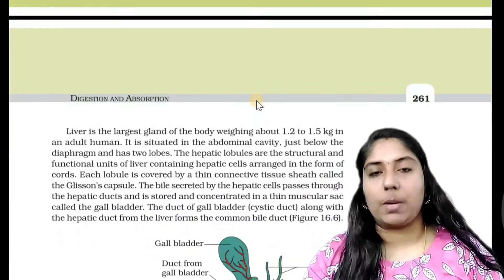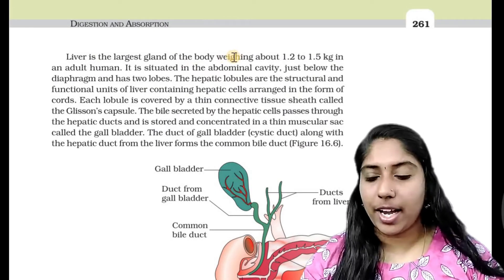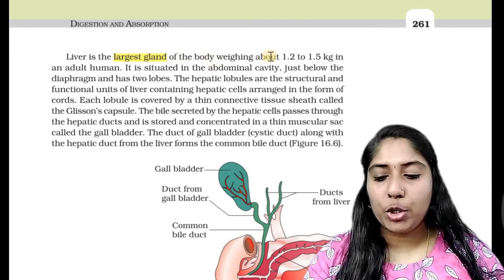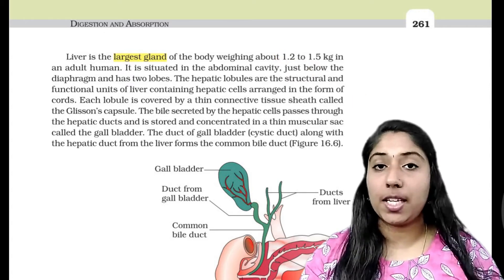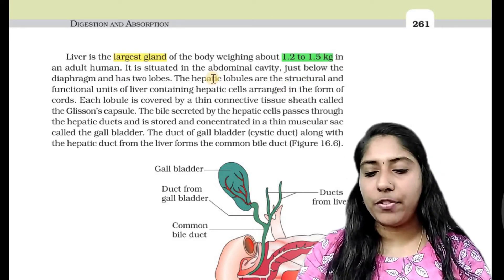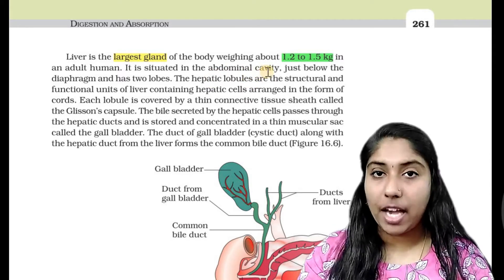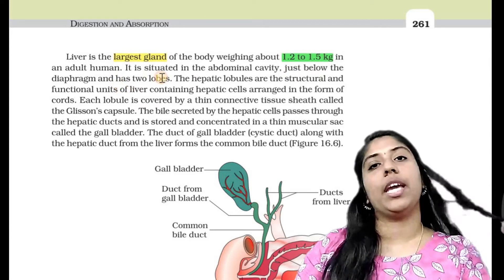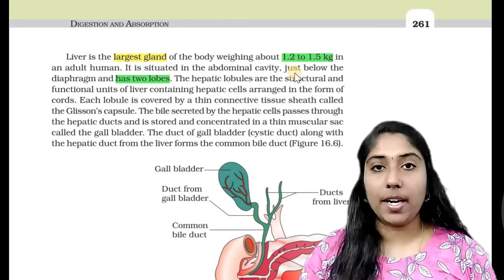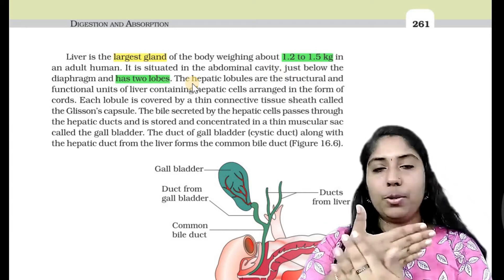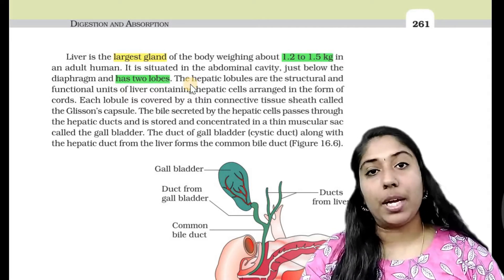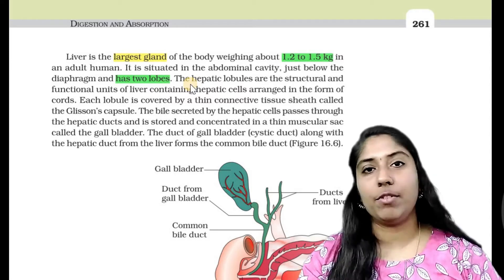Next, we'll start with the liver. The liver is the largest gland of the body, weighing 1.2 to 1.5 kg in an adult human. It is located in the abdominal cavity just below the diaphragm, on the right side, and has two lobes — the right lobe and the left lobe.